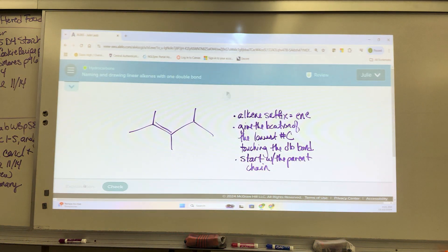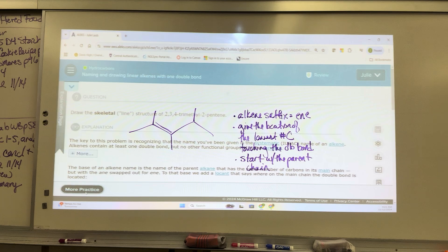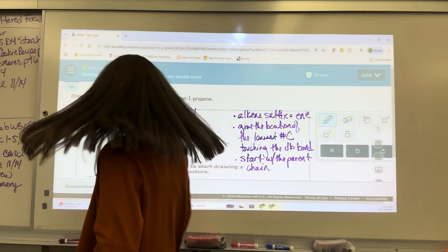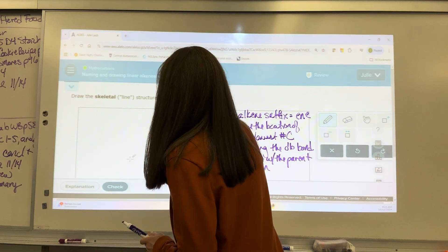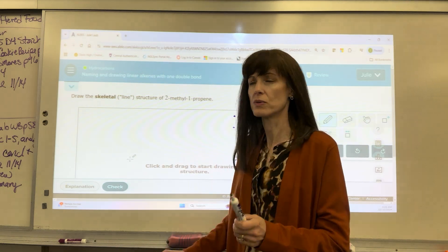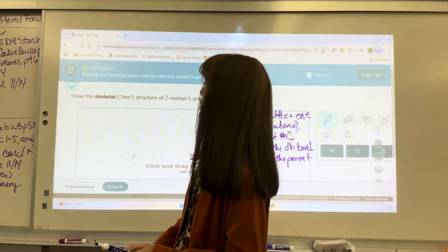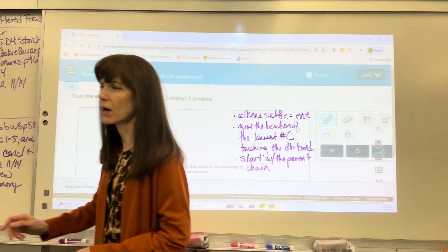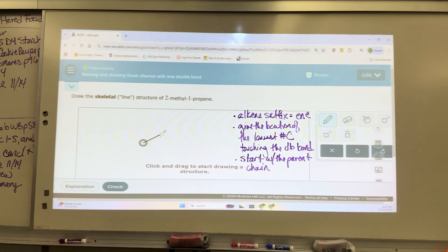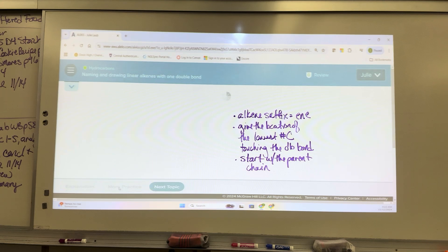We're going to do explanation and practice. I will actually use the drawing tool so that you can see this. So propene, you're thinking three carbons. I'm going to do one, two, and then three. The first double bond is on that carbon one. And then you have a substituent at the two. There it is, 2-methyl-1-propene.